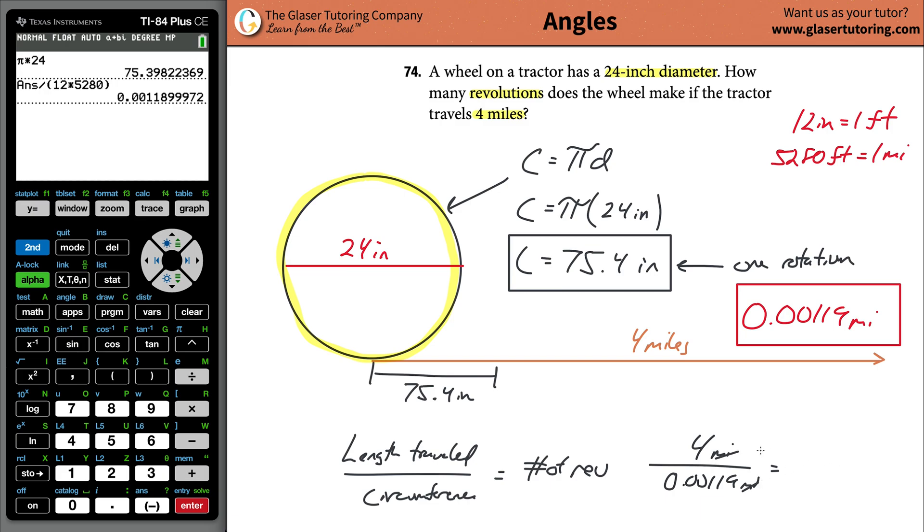Four miles, that was miles. This is going to be 0.00119 miles. These units cancel and the revolutions comes up here. Do that calculation: 4 divided by that answer from before. Hit second answer, and that takes the prior answer. This is going to be 3,361. I'm going to stop the rounding there.